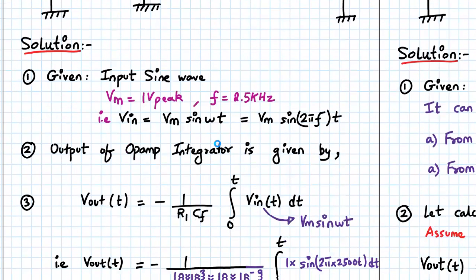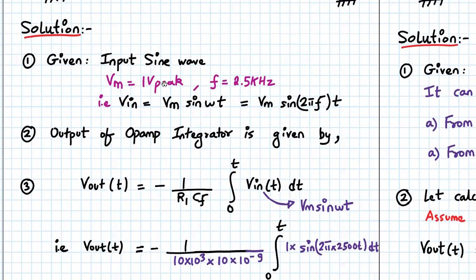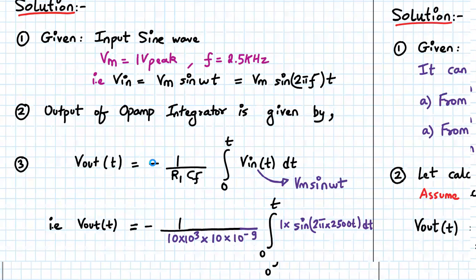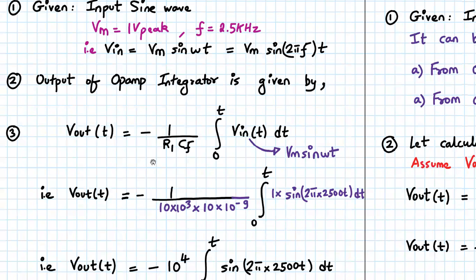The given data is: input is a sine wave of peak value VM which is one volt peak, and frequency is 2.5 kilohertz. So VIN is basically VM sine omega t, which equals VM sine 2 pi f times t. The output of the op-amp integrator is given by V out of t equal to minus 1 upon R1 times CF, integral from 0 to t of VIN dt, where VIN is VM sine omega t.